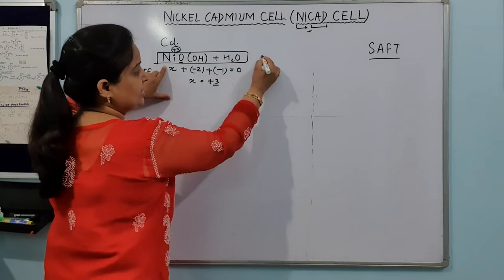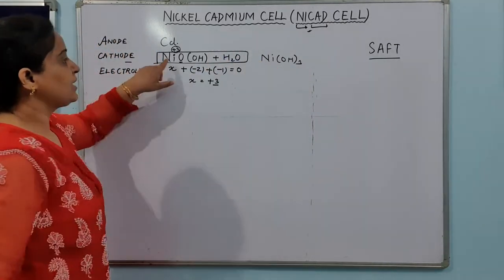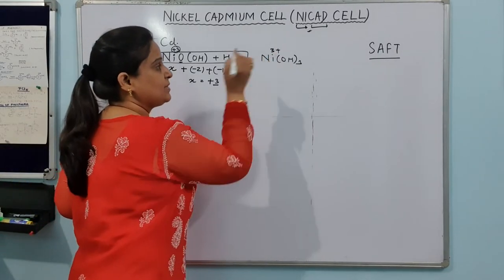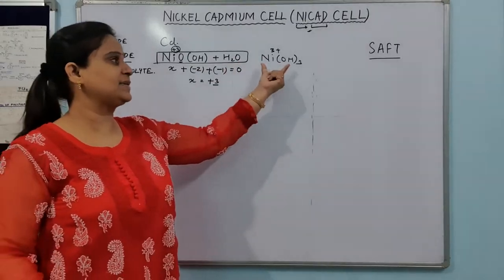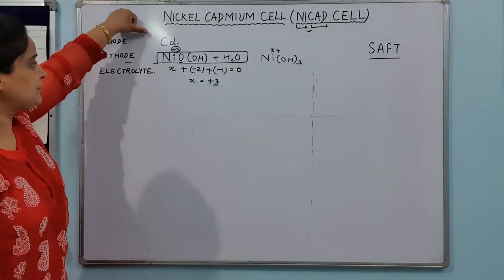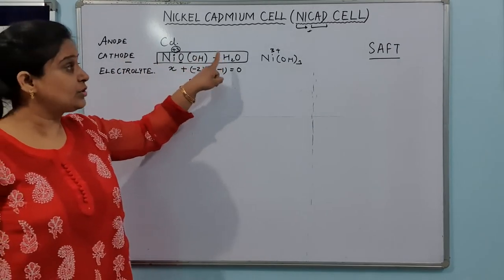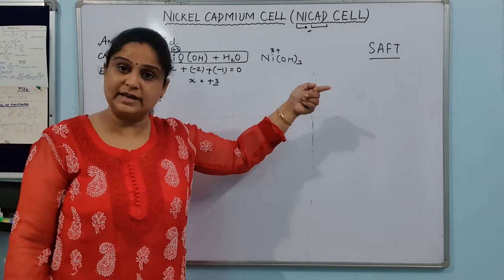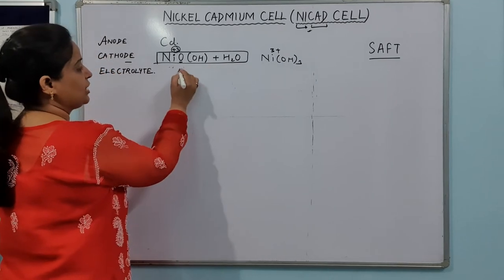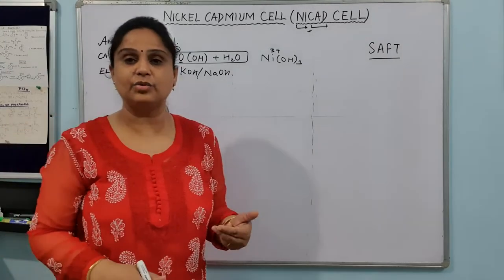NiOOH plus H2O gives Ni(OH)₃, which we can write as Ni(OH)₃ — the Nickel hydroxide with Nickel in the plus 3 oxidation state. To summarize: the anode is Cadmium, the cathode is Nickel Oxide Hydroxide (NiOOH), which in the presence of water acts as Ni(OH)₃, and the electrolyte is KOH or NaOH.